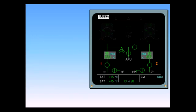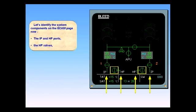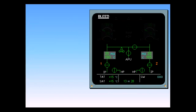Let's identify the system components on the ECAM page. The intermediate pressure and high pressure ports, the high pressure valves, the engine bleed valves.